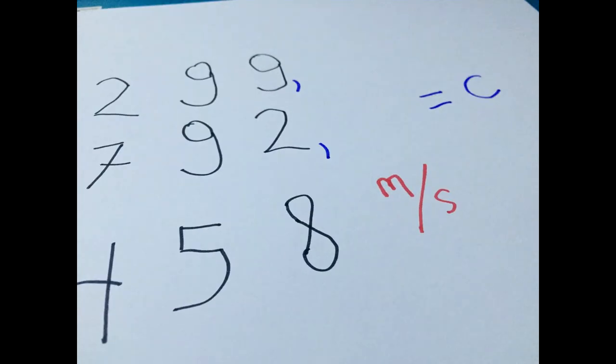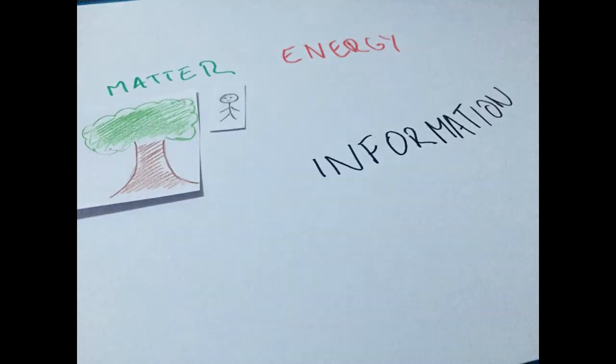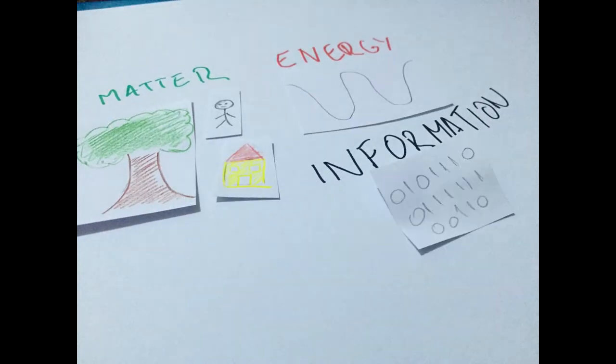This is what we consider to be the speed of light today, denoted by C. We also consider that matter, energy, and information can never travel faster than it.